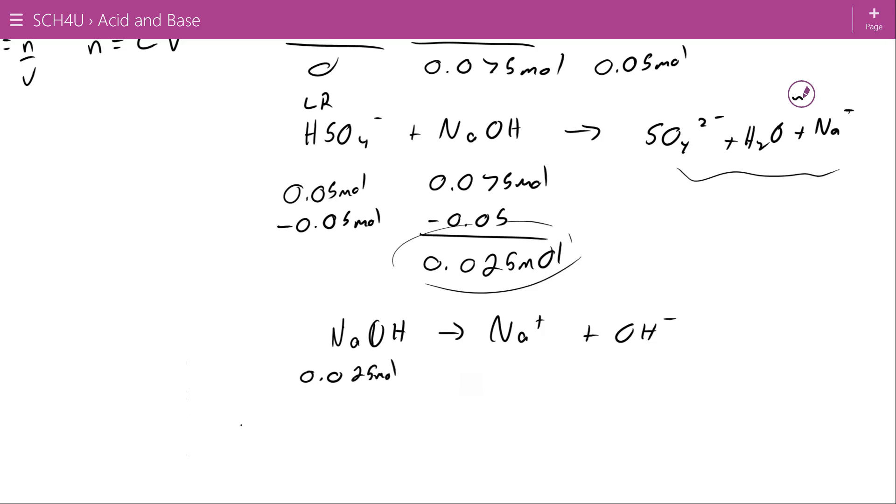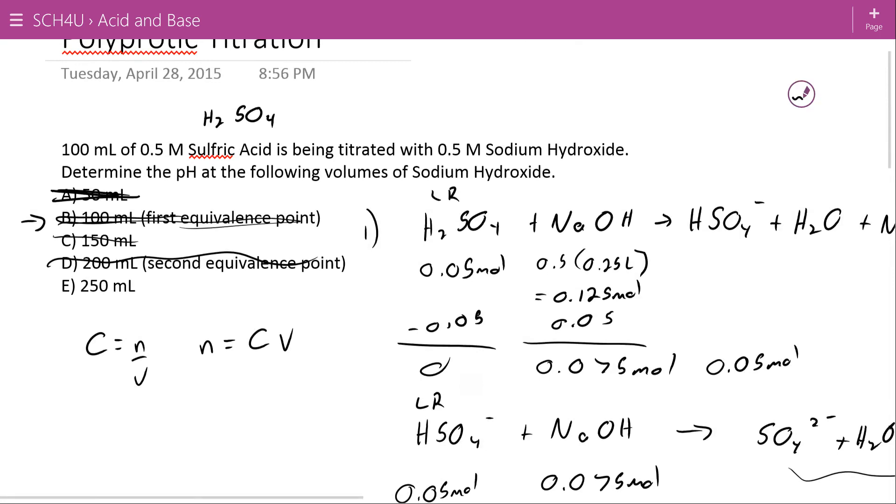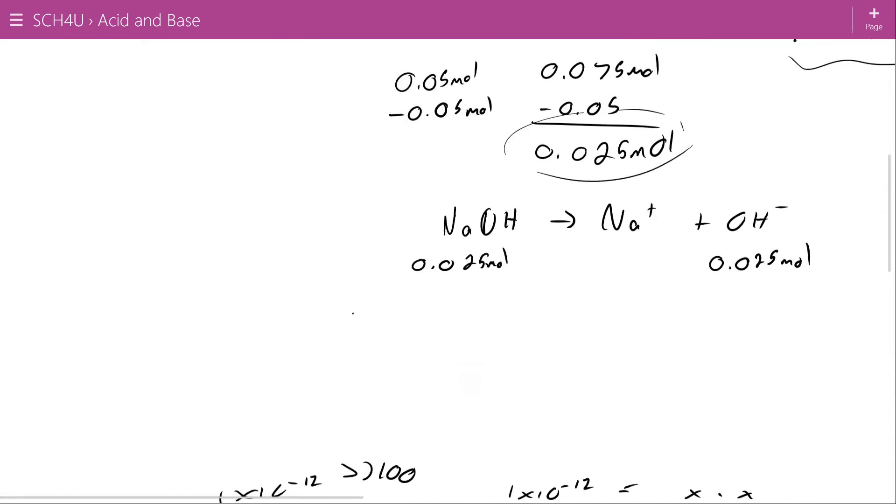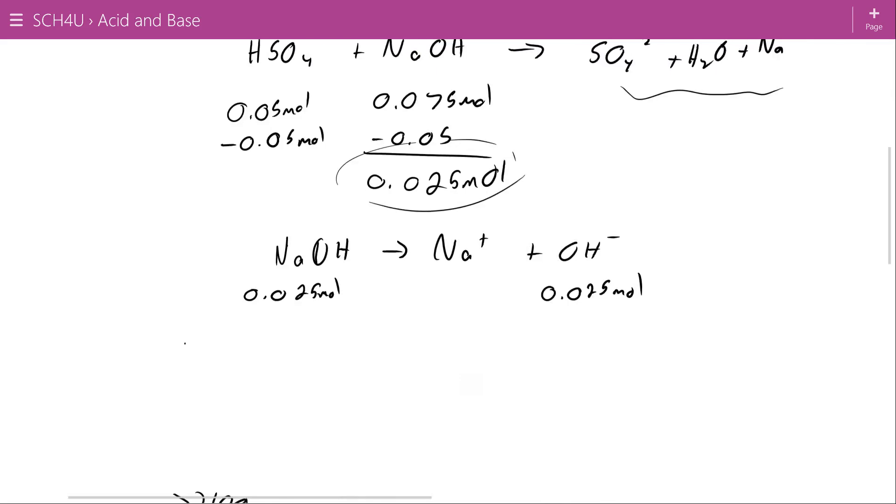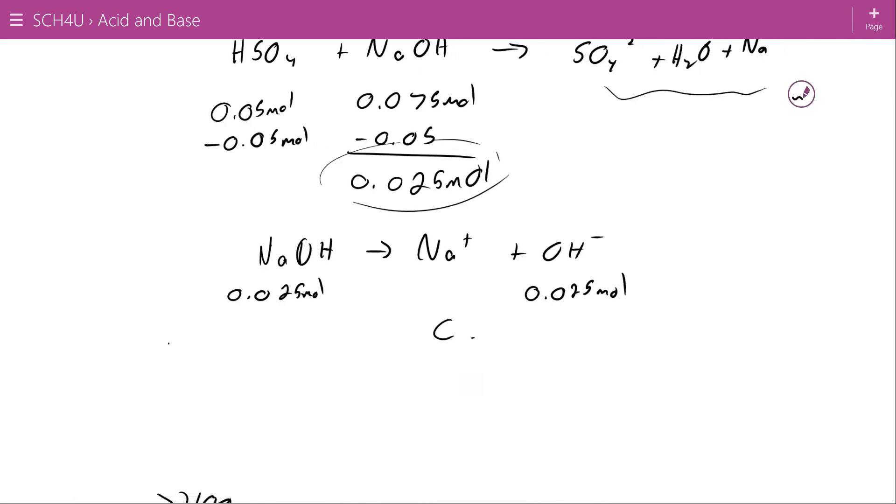My final total volume, 250 plus 100, is going to be 350. So if I've got 0.025 moles divided by my volume of 0.35 liters, I'm going to get a concentration of 0.0714 molar.